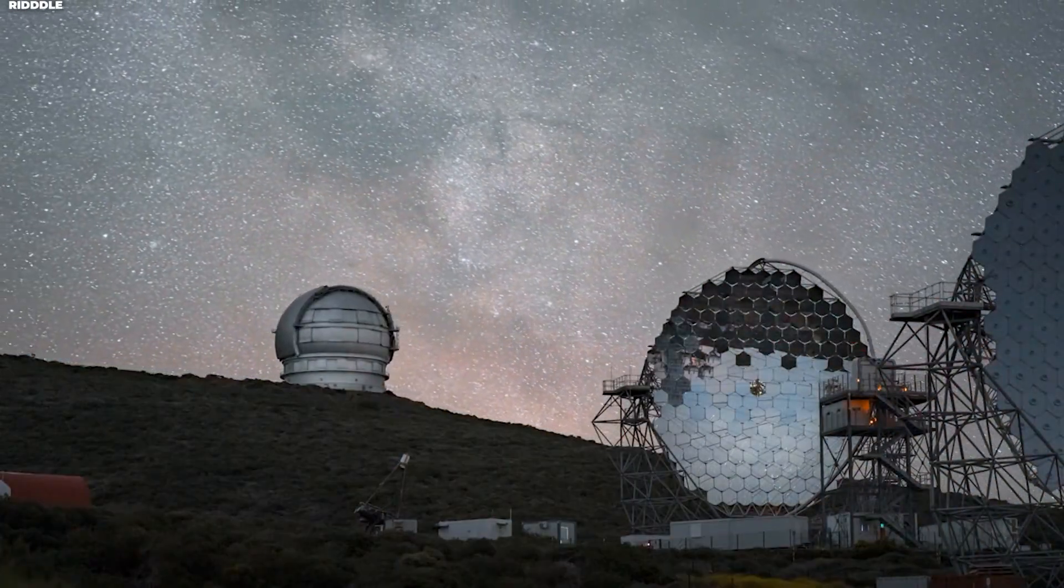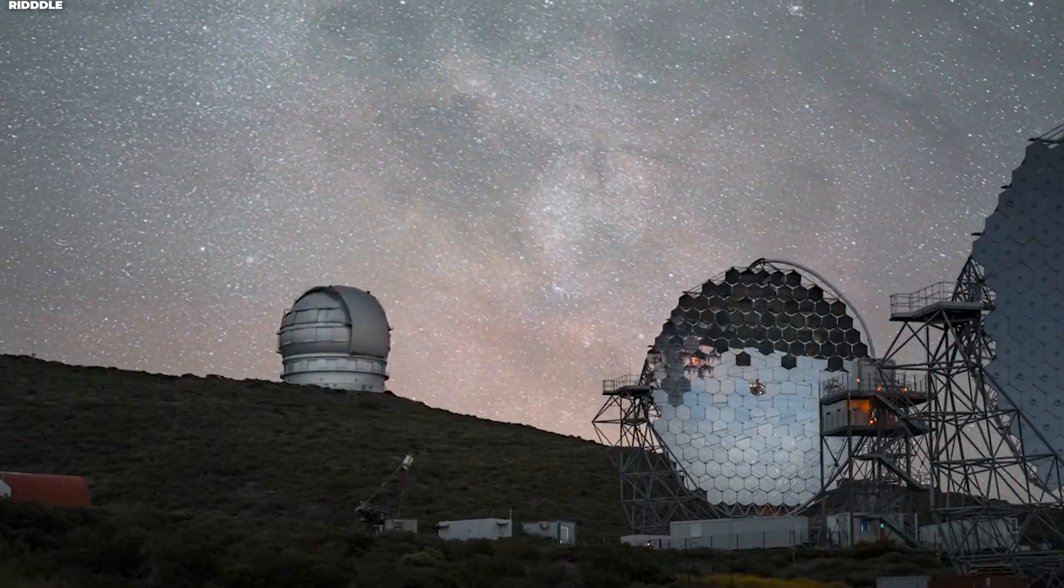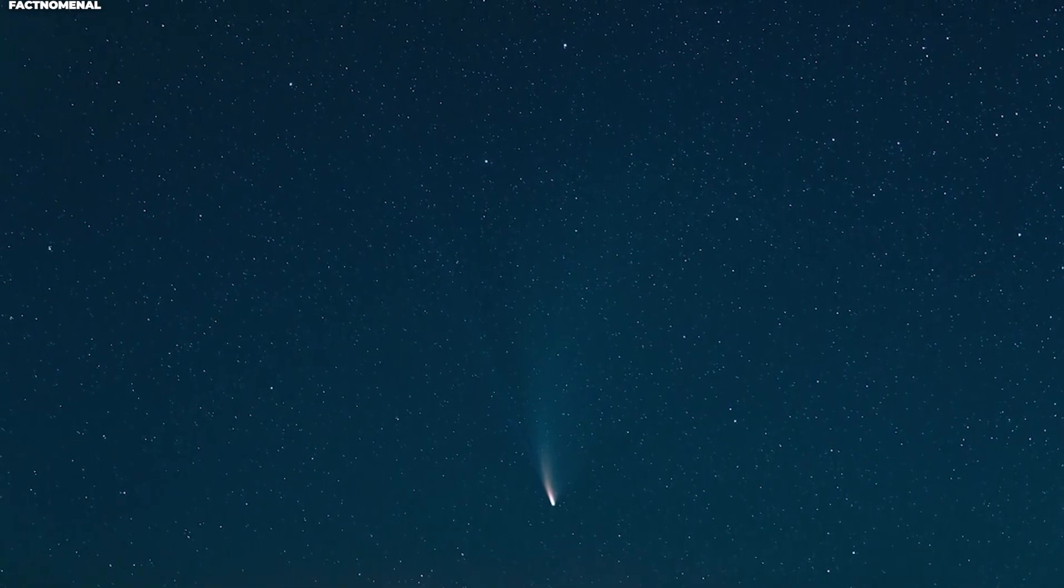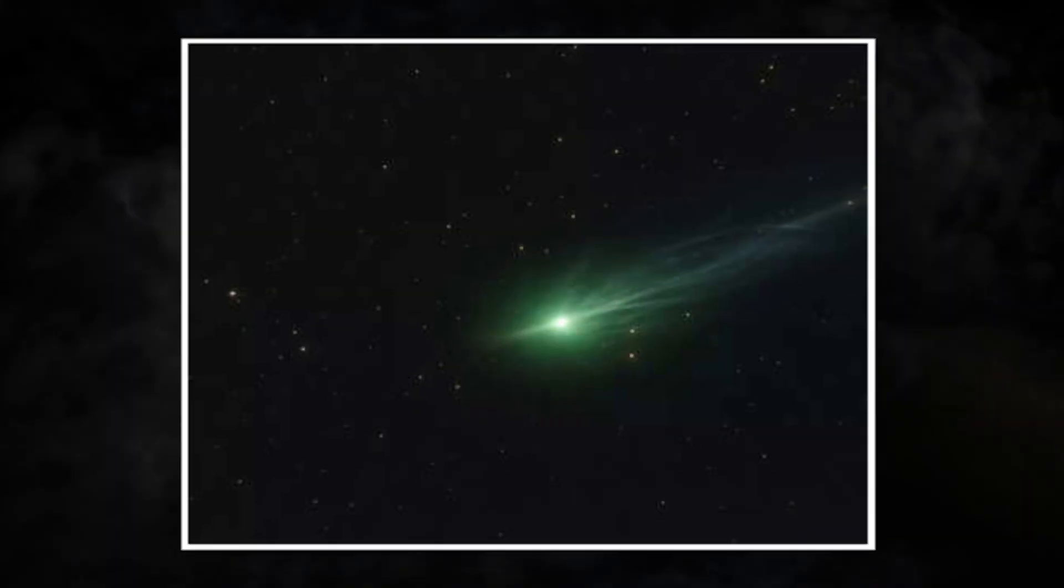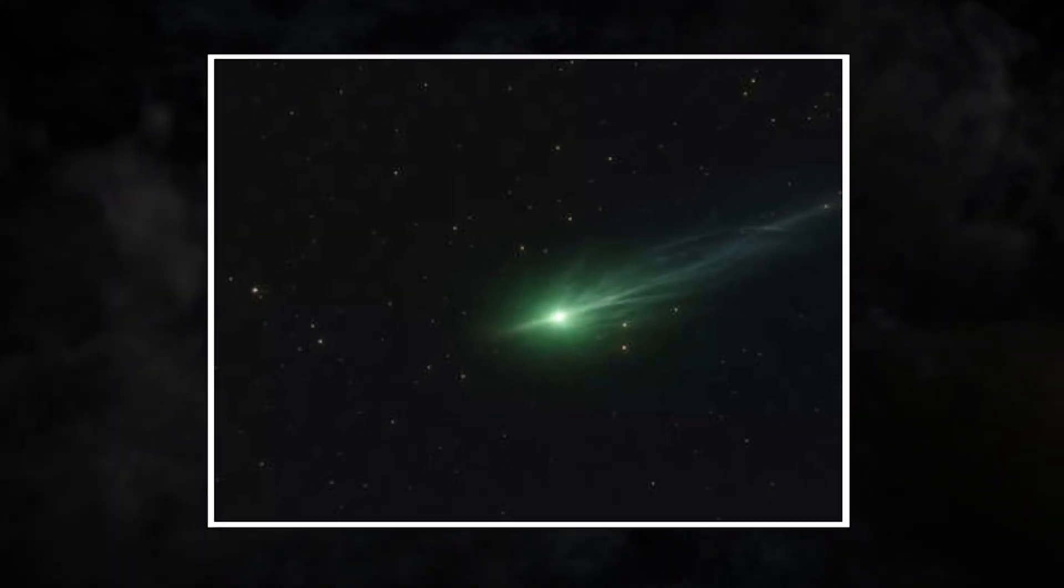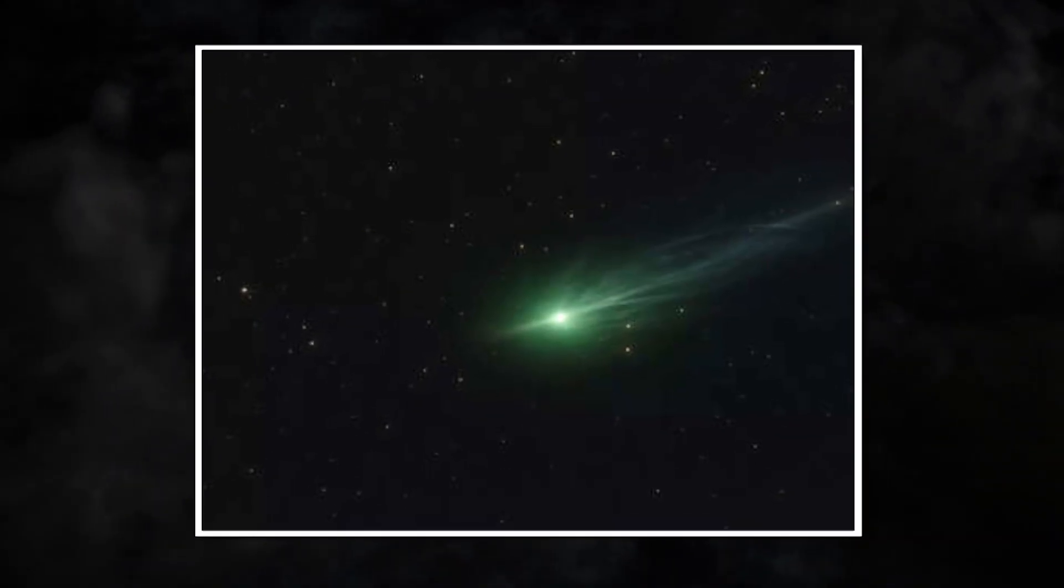As the comet approached, ground-based telescopes on Earth were also tracking it closely. Astronomers were observing 3i-ATLAS from multiple locations, gathering data about its composition, size, and behavior as it heated up from the sun's radiation.